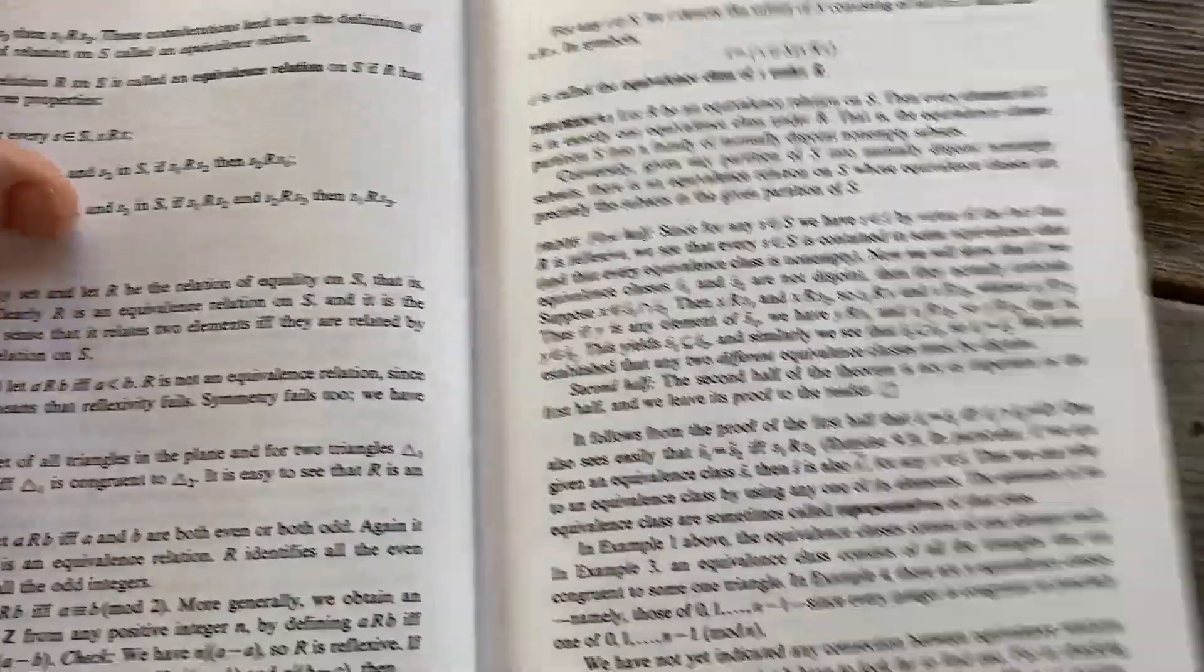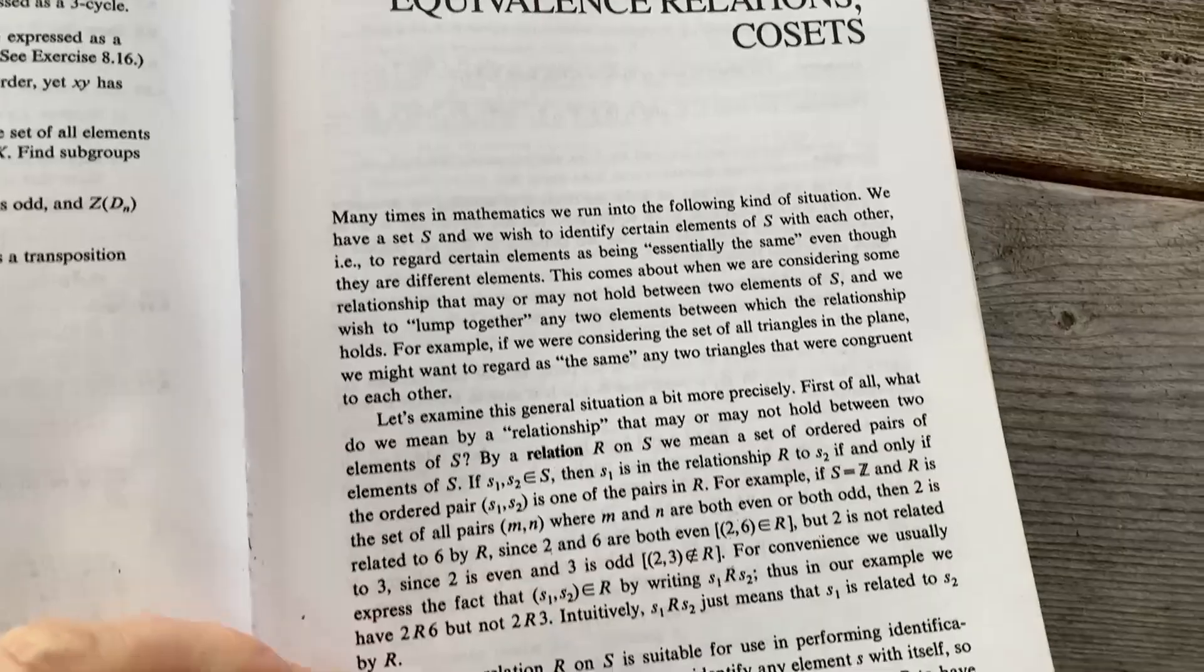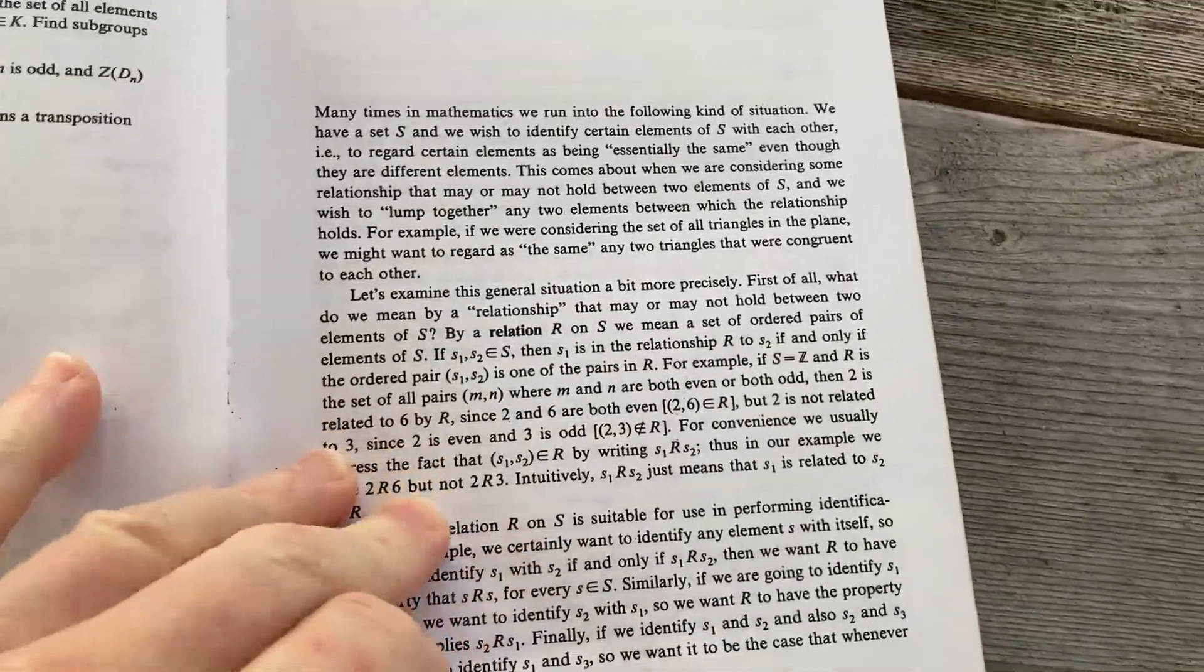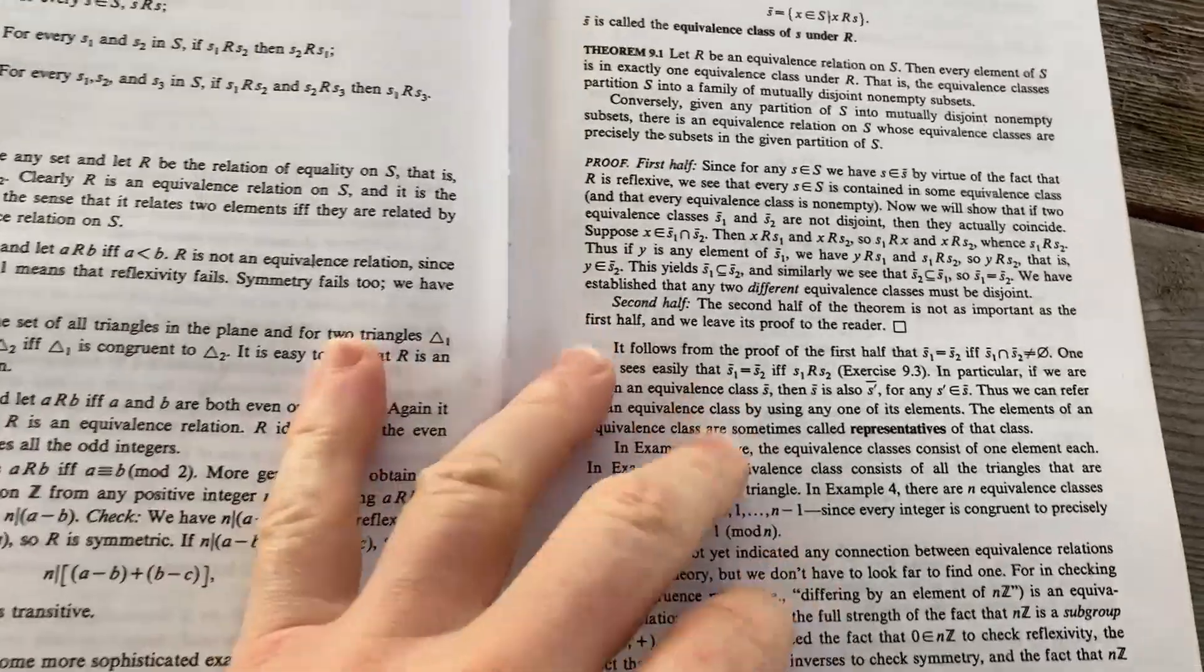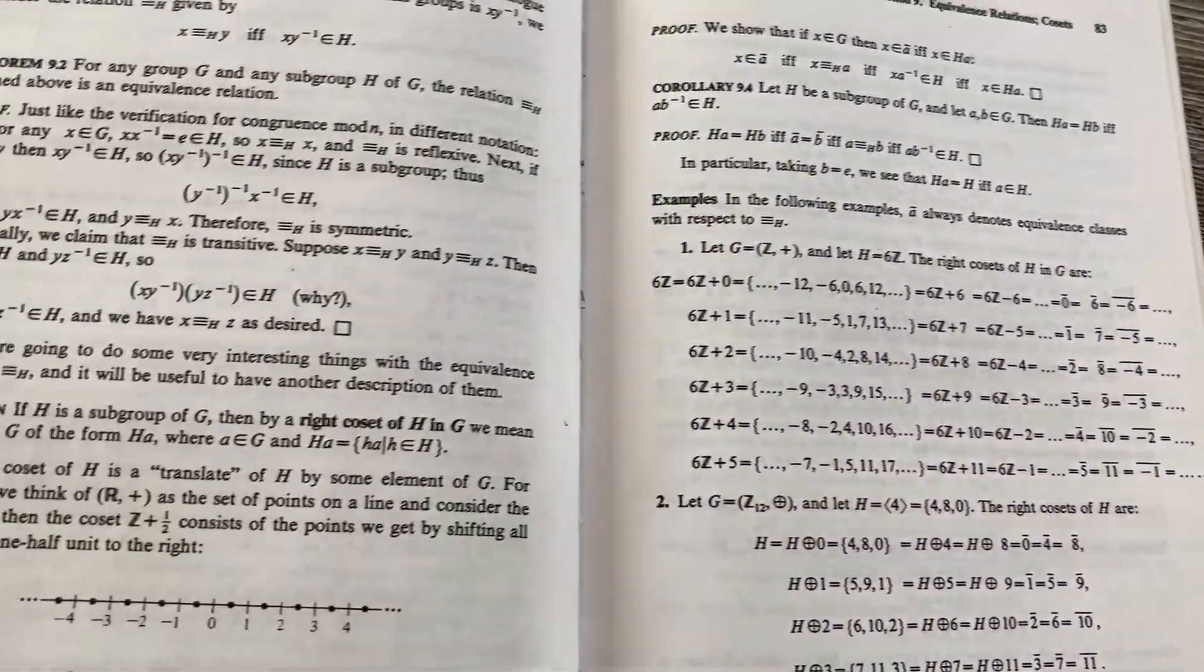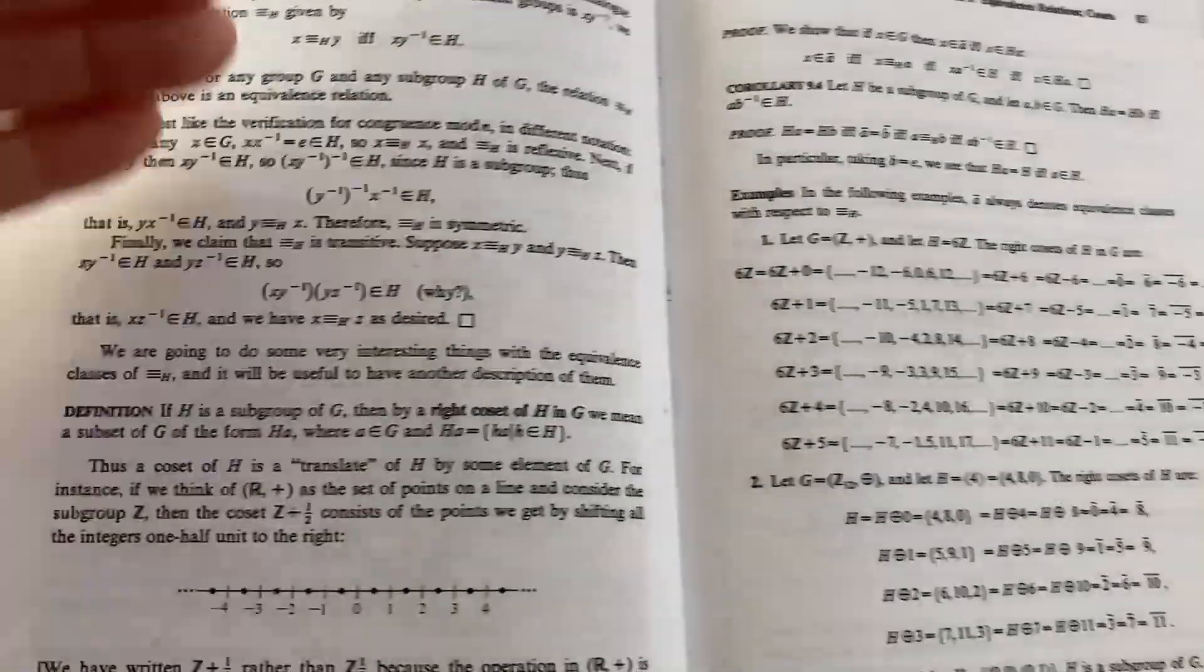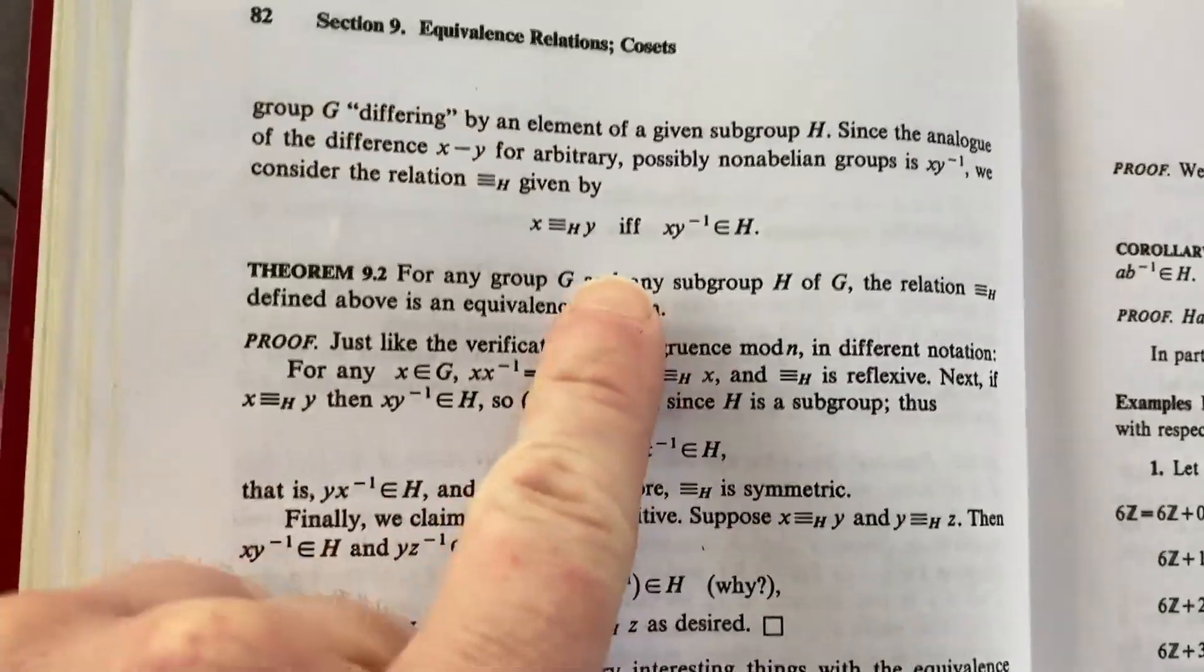This book also does a great job on equivalence relations and cosets. He basically goes through all of it. Right here, section 9, equivalence relations and cosets. From the beginning, he defines a relation and then talks about an equivalence relation and just breaks it down. Breaks down all the theory, proves everything,